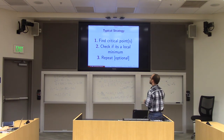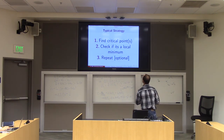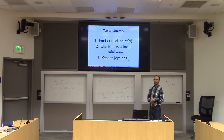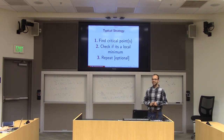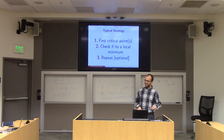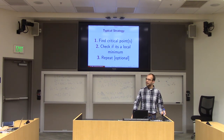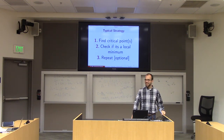A typical strategy for minimizing f is to search for critical points and then check if they're local minima. In fact, oftentimes in optimization we just stop and say: it's smaller than where you started, so you should be happy — which is unfortunately state-of-the-art in many cases.